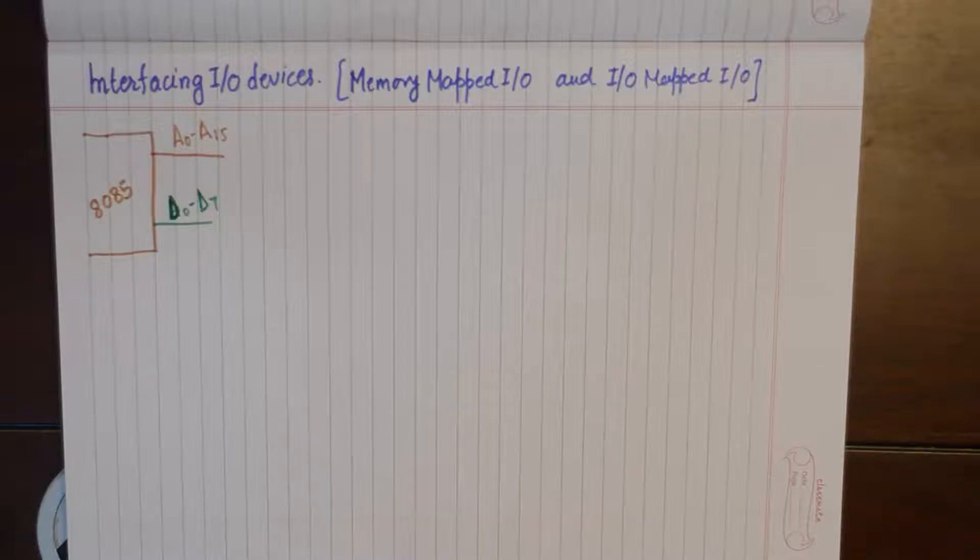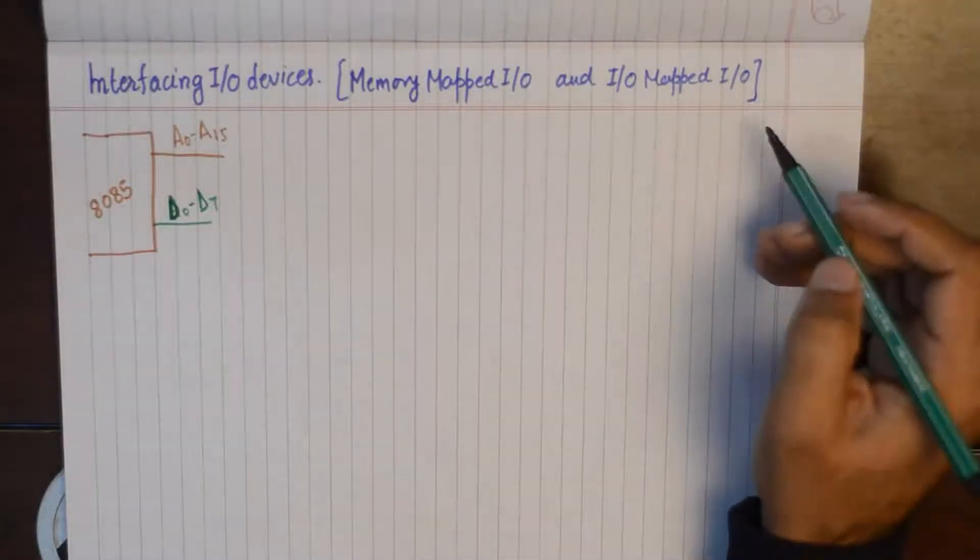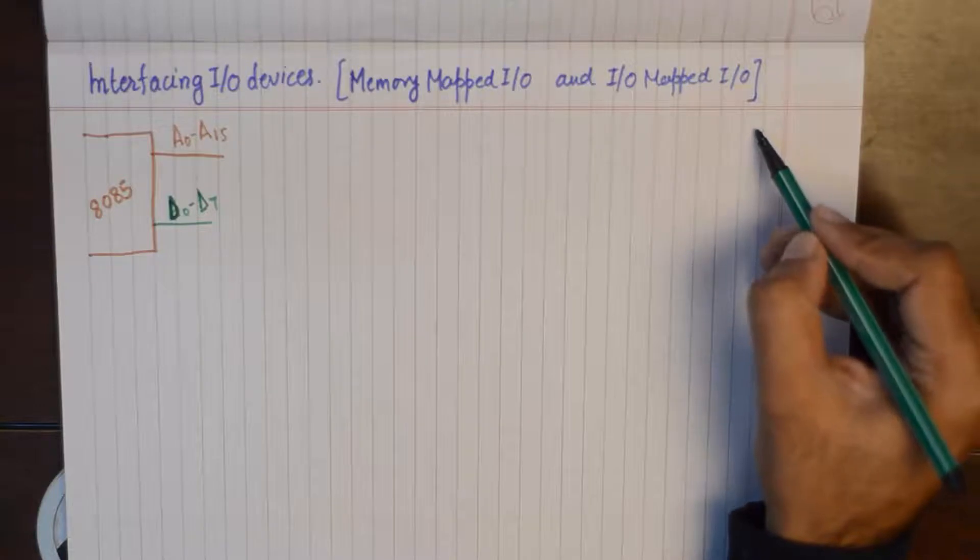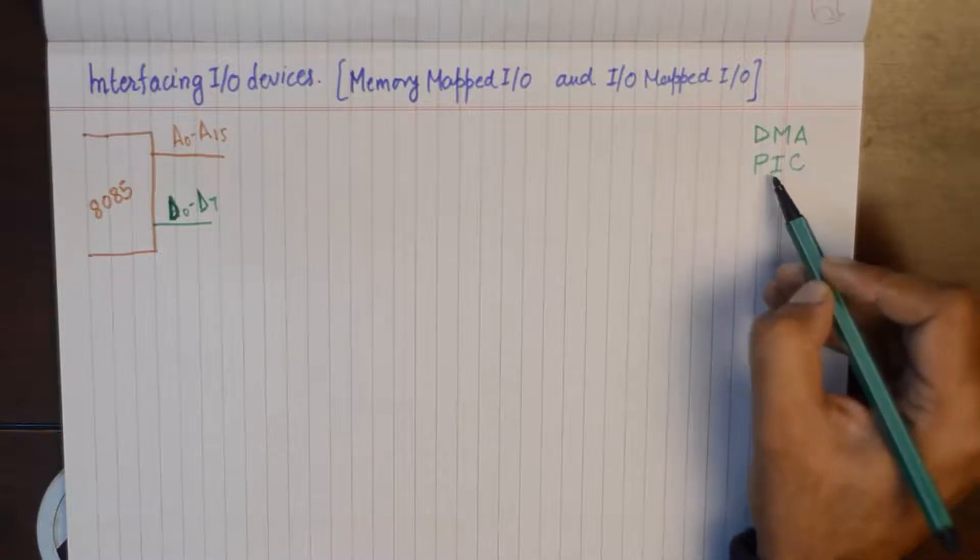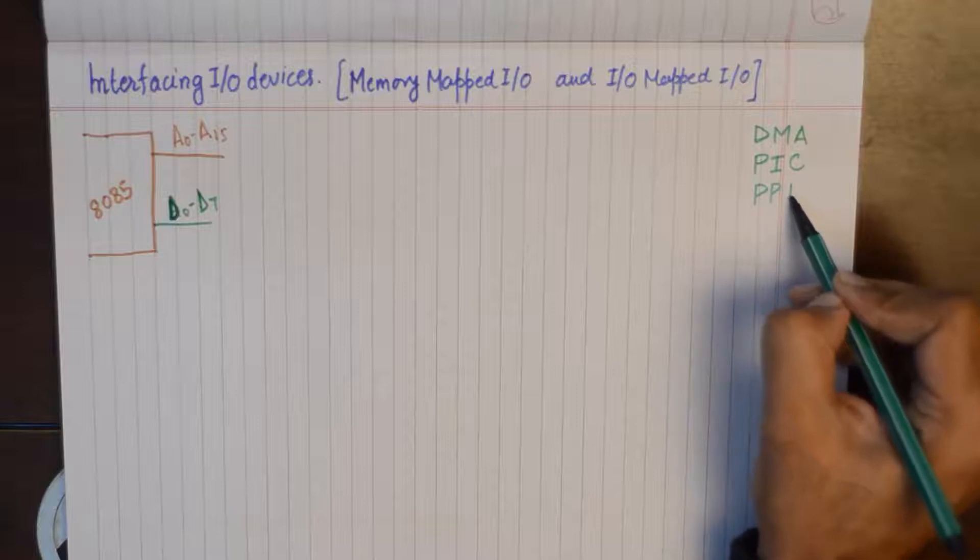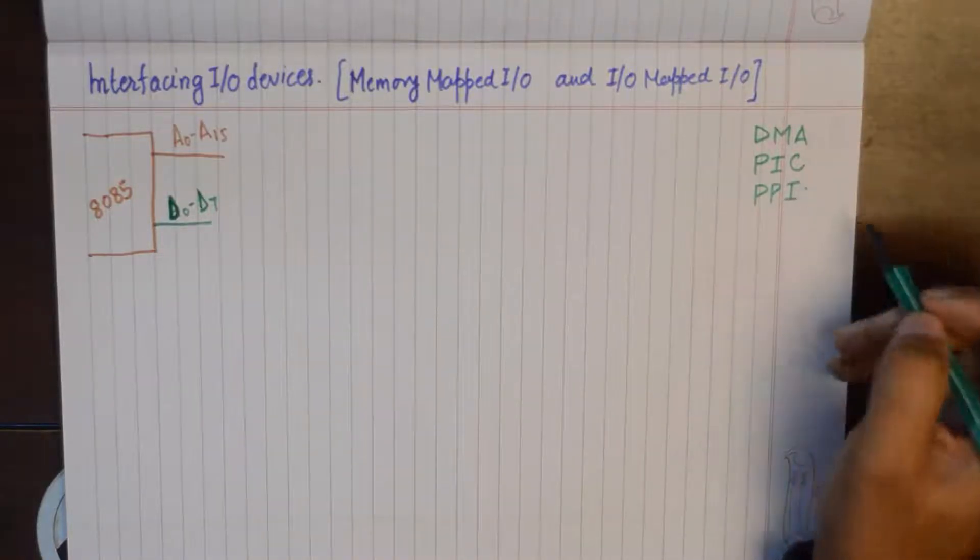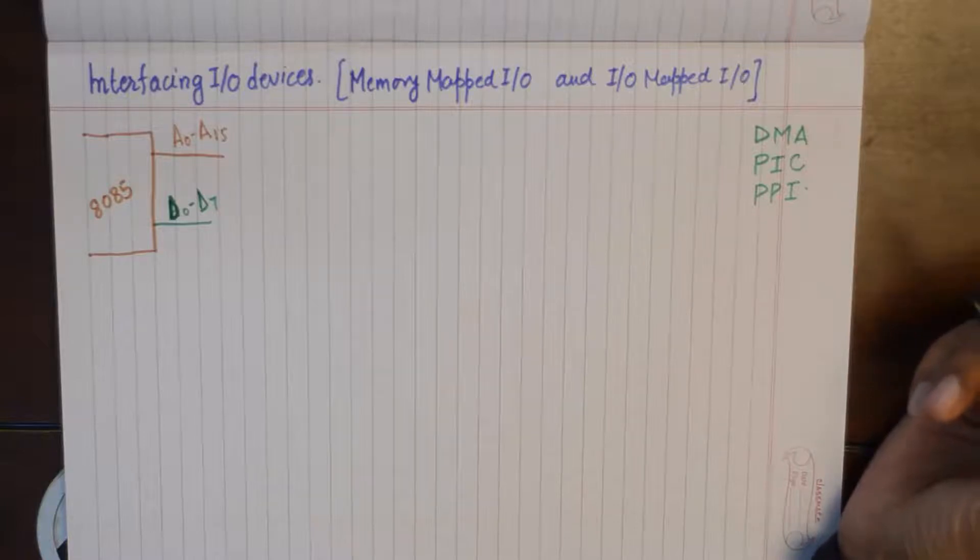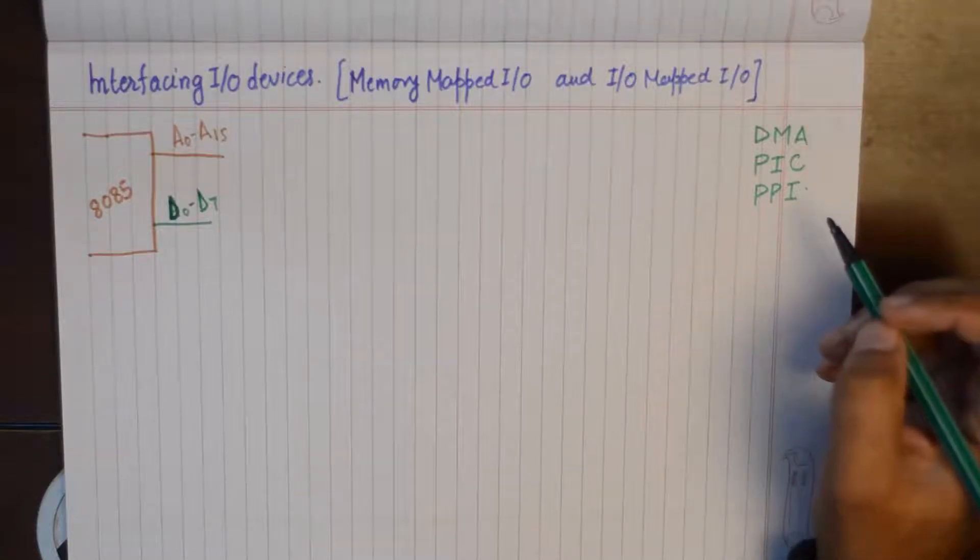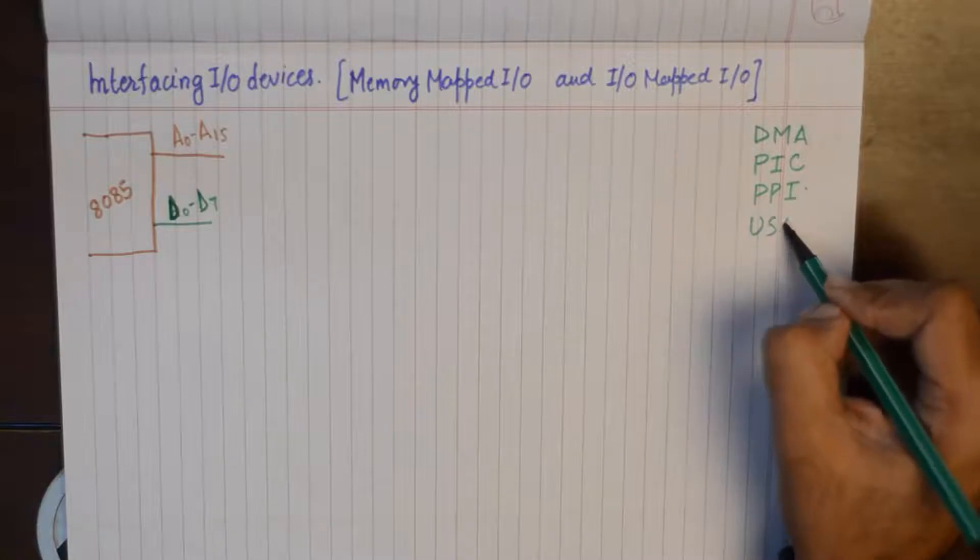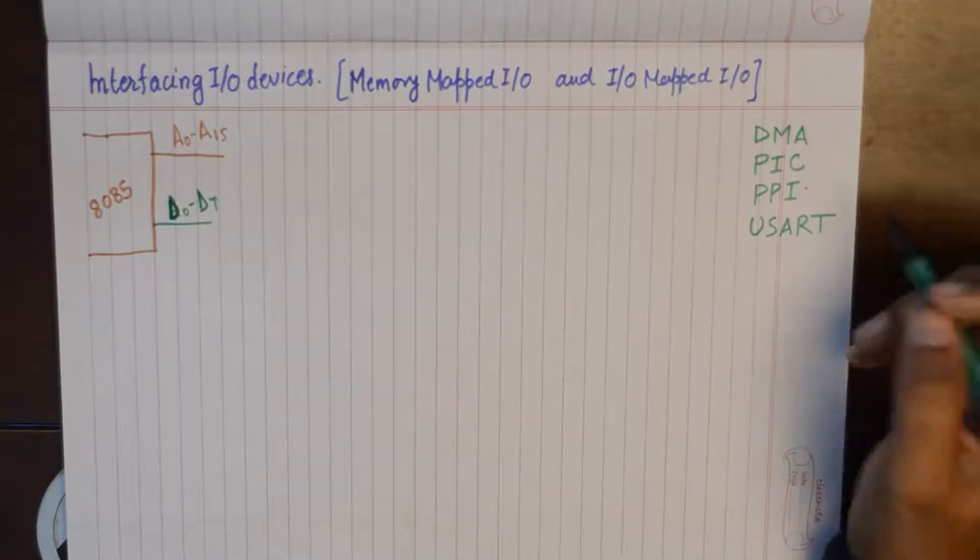An I/O device would be a device that will perform a specific function along with the microprocessor. Examples of I/O devices are your DMA controller, priority interrupt controller, programmable peripheral interface, USART controller, and so on.